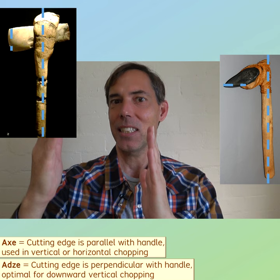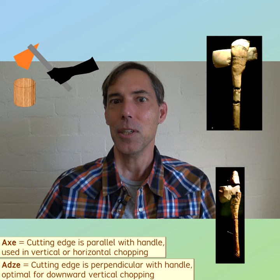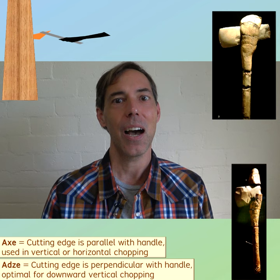The cutting action of an axe can move along a vertical axis, such as when splitting firewood. The motion could move equally along a horizontal axis, such as when chopping into the side of an upright tree trunk.